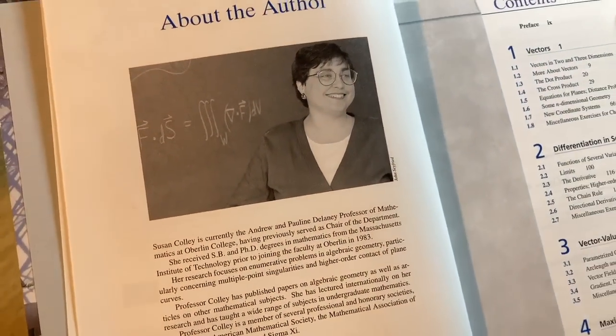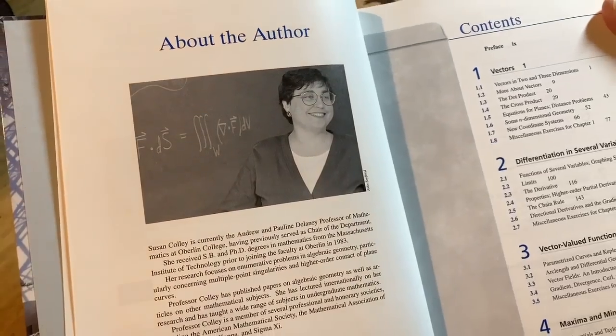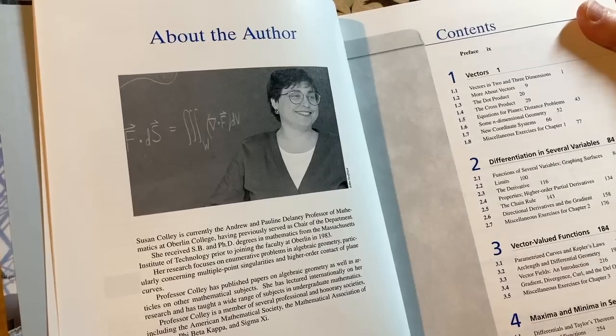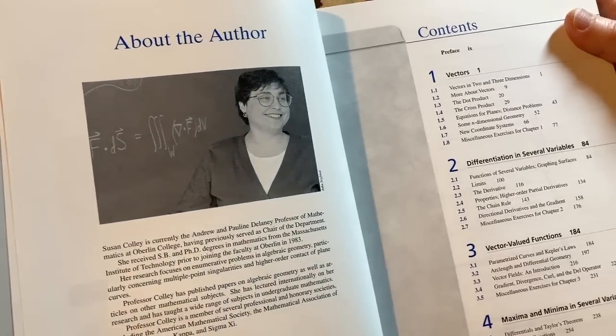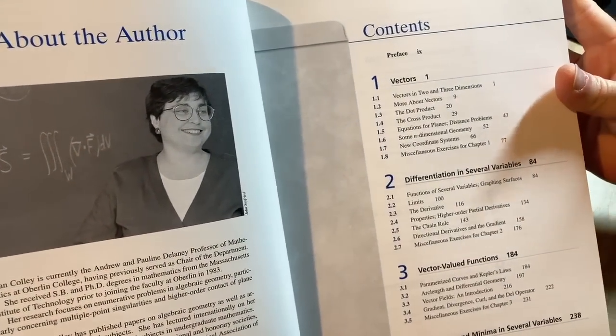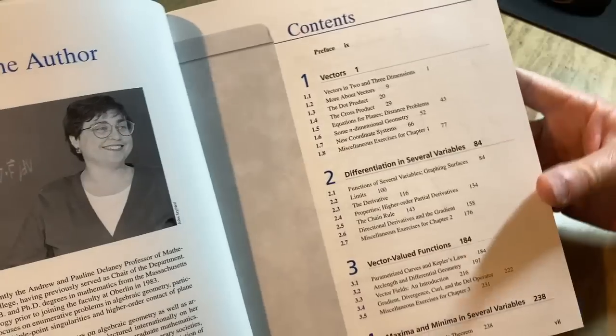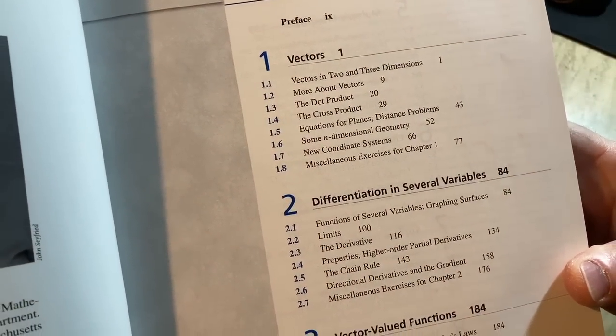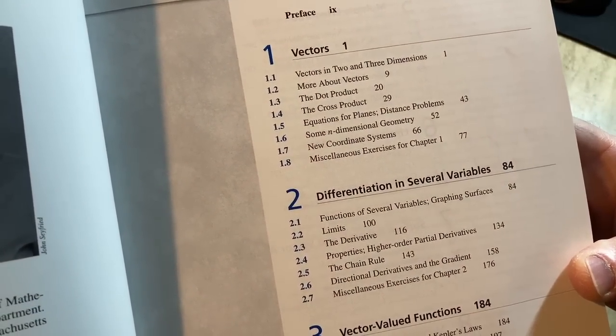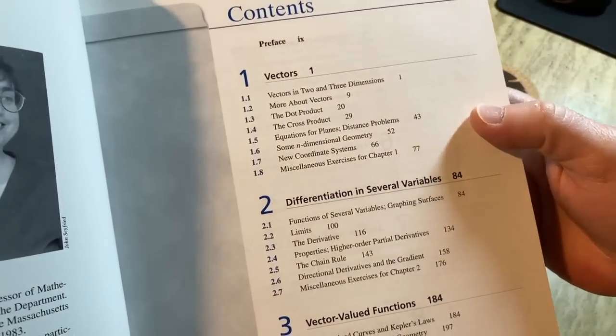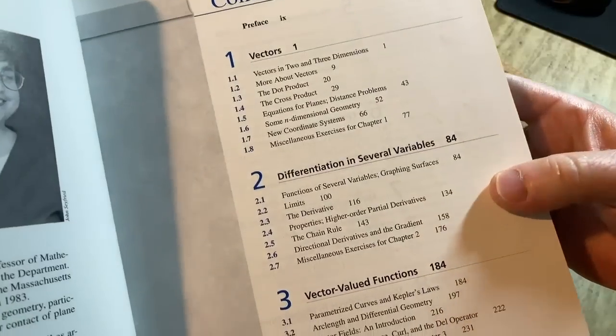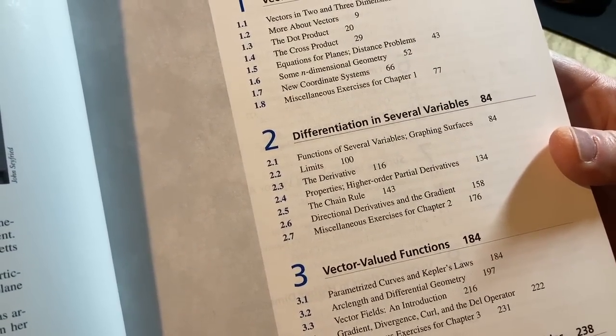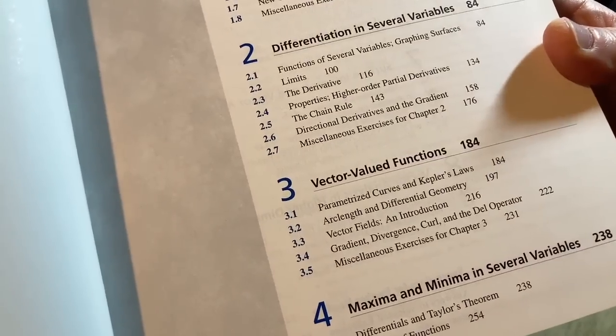I had a friend on the internet. He studied at Oberlin. I think he was a music major. He was a really smart dude. We used to hang out in this chat room and talk about stuff back in the early 2000s. So here's the contents. Vectors. Vectors in two and three dimensions. So very similar to a calc 3 class. You would typically start a calc 3 course with vectors. And then right away, differentiation in several variables.